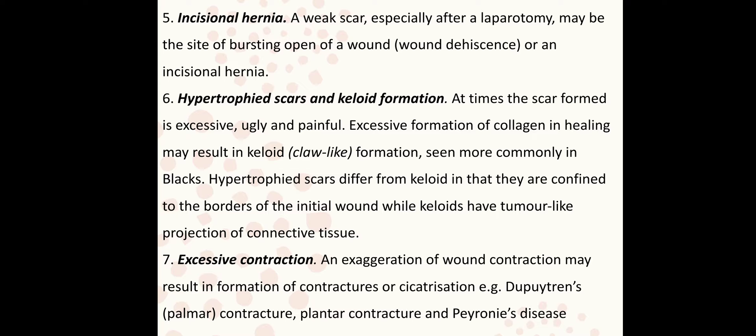Fifth is hypertrophied scars and keloid formation. At times the scar formed is excessive, ugly, and painful. Excessive formation of collagen during healing results in keloid formation, which is commonly seen in black individuals. Hypertrophied scars are different from keloids — hypertrophied scars are confined to the borders of the initial wound, while keloids have tumor-like projections. Excessive wound contraction may result in contractures — examples include plantar contracture and Peyronie's disease.